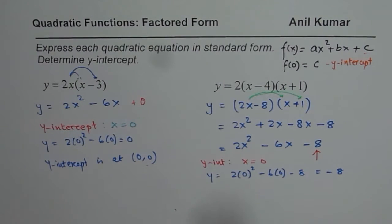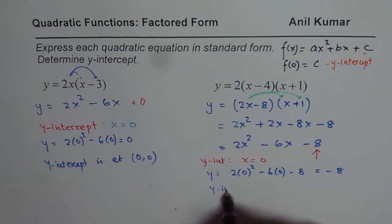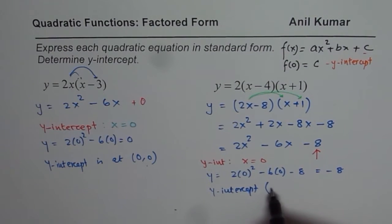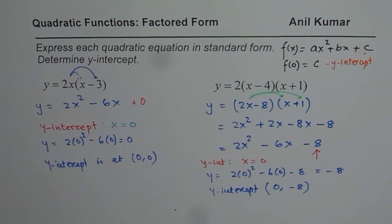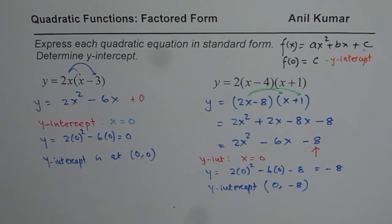So you can write down the answer here is that the y-intercept is at, always the x value is going to be 0, y value is minus 8. So that is how it could be answered. Thank you and all the best.